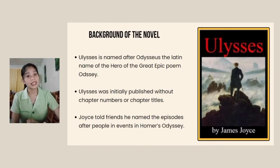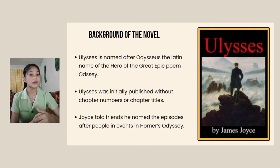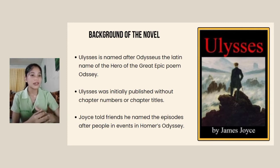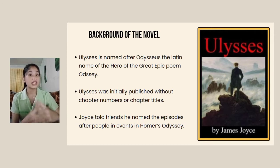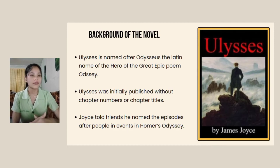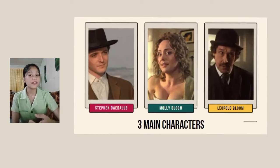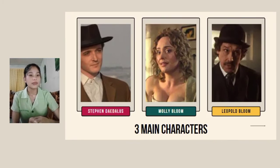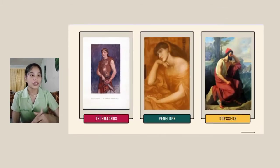Ulysses is named after Odysseus, the Latin name of the hero of the great epic poem the Odyssey, attributed to the poet Homer. Homer's epic tells of Odysseus' adventures following the Trojan War as he sails home to the land of Ithaca to rejoin his son Telemachus and his wife Penelope. The three main characters of Ulysses — Stephen Daedalus, Leopold Bloom, and Molly Bloom — parallel the Odyssey's Telemachus, Odysseus, and Penelope.